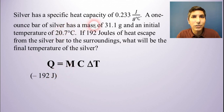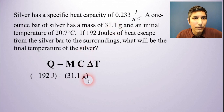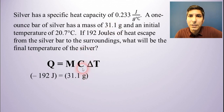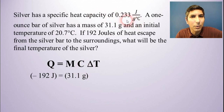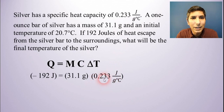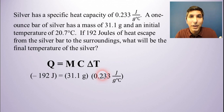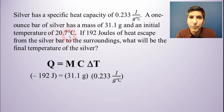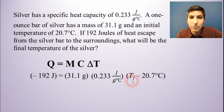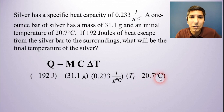M is the mass, and the mass is 31.1 grams, so that goes in for M. C is the specific heat capacity of this material, which is 0.233 joules per gram degree Celsius, so that value goes in for C. For delta T, the problem doesn't give me that value directly, but it does tell me the initial temperature was 20.7 degrees. It doesn't tell me the final temperature, but I know delta T is final minus initial, so I'll plug in T sub f minus 20.7 degrees Celsius.